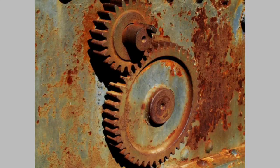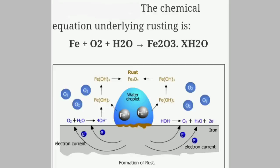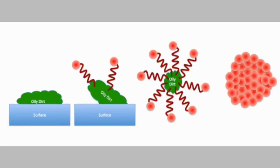The next topic is the rusting process. As mentioned in the first lecture, when iron is exposed in the presence of oxygen and water, a brown powdery layer is formed — this is rusting, which is a chemical reaction.